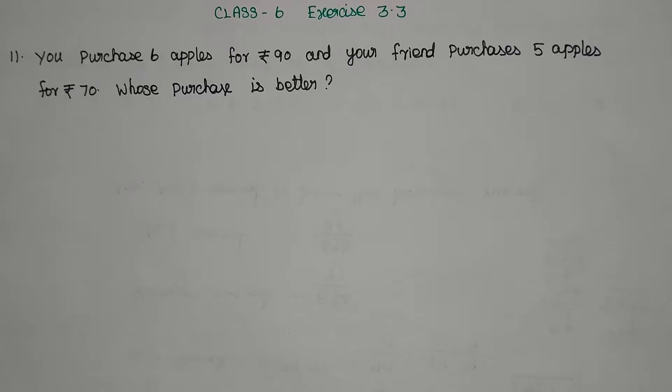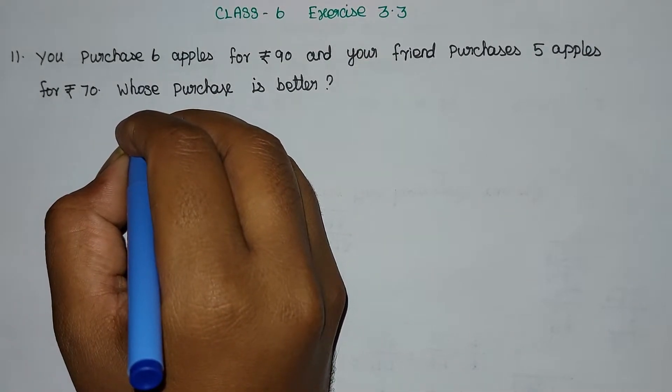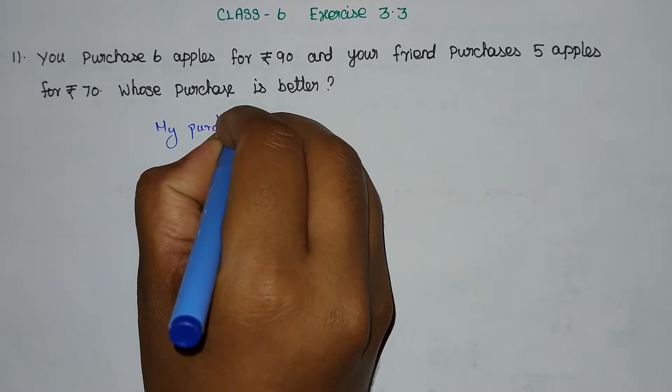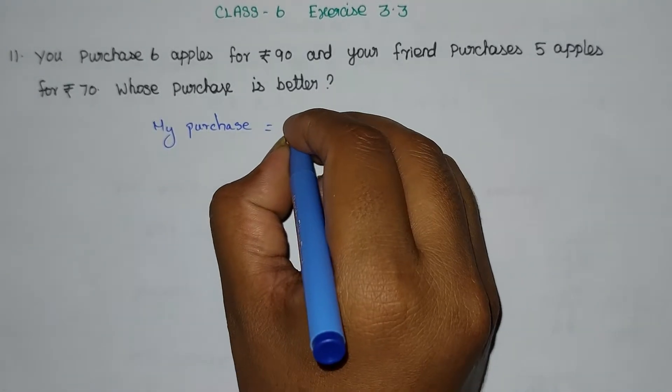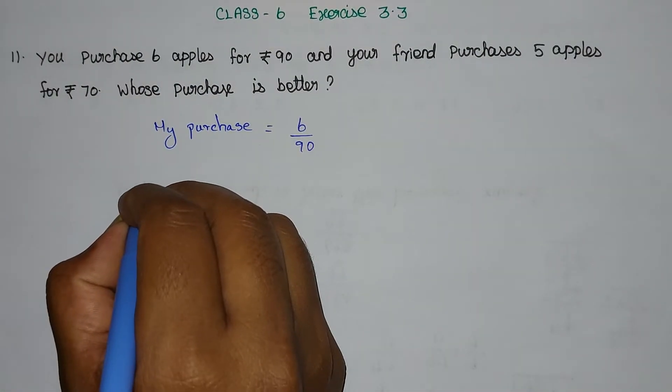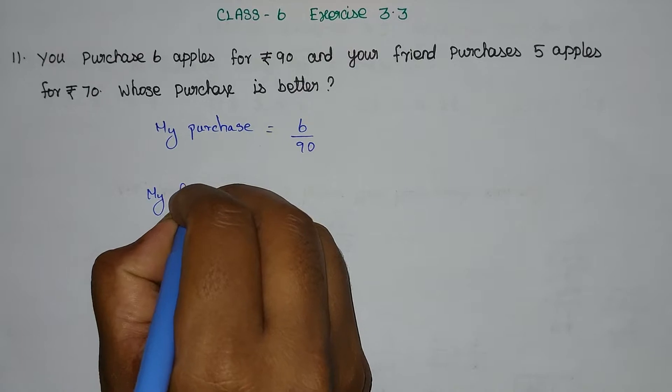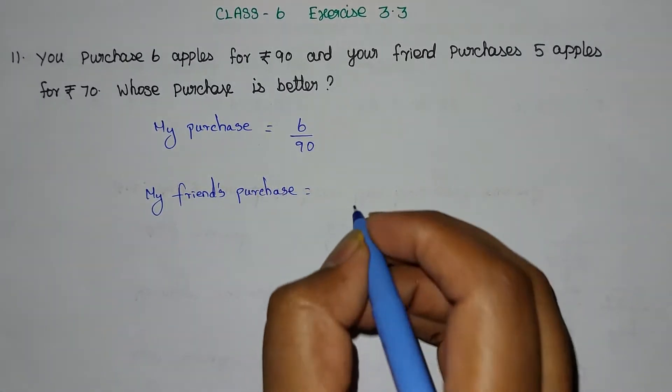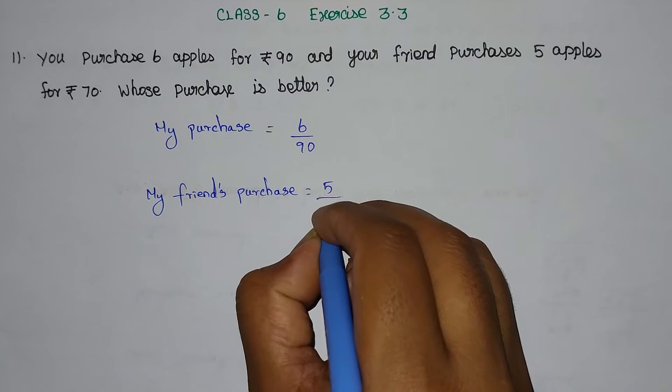Now we are going to solve problem number 11. You purchase 6 apples for 90 rupees and your friend purchases 5 apples for 70 rupees. Whose purchase is better? My purchase: 6 by 90. My friend's purchase: 5 by 70.